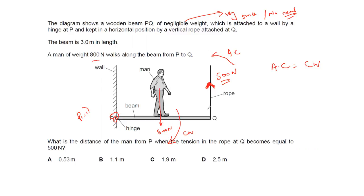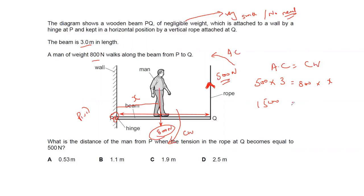The anti-clockwise moment: 500 × 3 (the rope is at the end of the 3-meter beam, so distance from pivot = 3 m). The clockwise moment: 800 × x, where x is the unknown distance of the man from the pivot. So: 500 × 3 = 800 × x, giving 1500 = 800x.